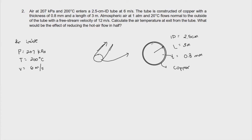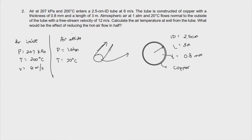The air inside is quite hot, so it will be cooled by atmospheric air. So basically, there is air outside, and the pressure of that outside air is 1 atmosphere since it is our surrounding. The outside air temperature is 20 degrees Celsius, and it flows normal to the outside of the tube with a free stream velocity of 12 meters per second.